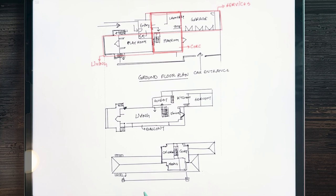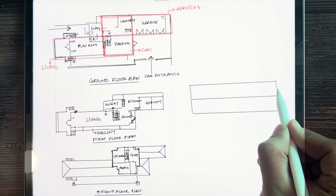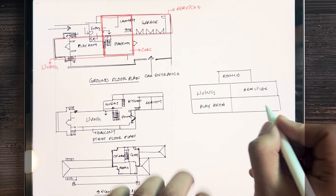The house has a balcony view on all four sides. In the schematic section, the top floor has rooms, the first floor has the living area, kitchen, and servant rooms, and the ground floor has the play area and garage.